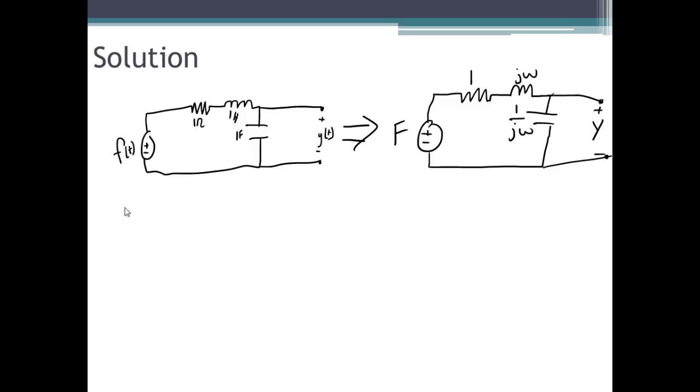To find the output phasor Y, we apply the voltage divide rule. So Y is equal to the input voltage f times the impedance of the capacitor over the total impedance of those three components that are in series. We can simplify this by multiplying both top and bottom by j omega, which will give us f over j omega plus j omega squared, which is just minus omega squared, plus 1.